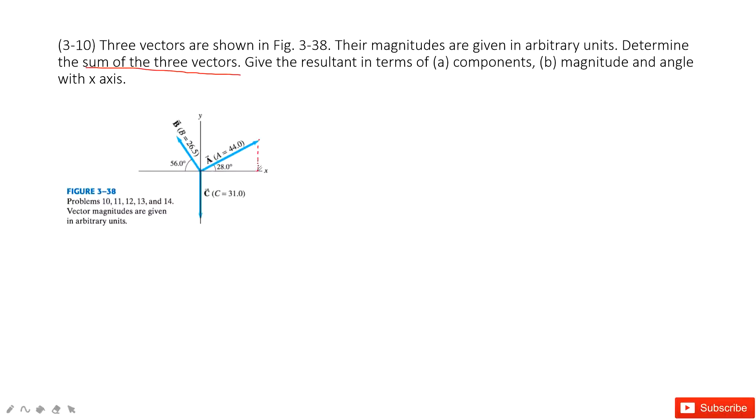For A, we can project it into the x-component, this is Ax, and then project it into the y-component. For B, similarly we project it into the y-component and x-component. And C, because it is in the y-direction, we don't need to do anything.